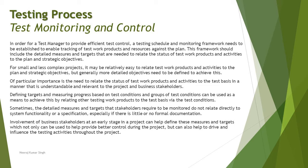Defining targets and measuring progress based on test conditions and groups of test conditions can be used to relate other test work products to the test basis via test conditions. The first thing derived from the test basis is the test condition, and from test conditions you further break them into test cases or test scripts. At any point in time, child work products must be related directly to the test basis. Sometimes the detailed measurements and targets that stakeholders require do not relate directly to system functionality or a specification, especially if there is little or no formal documentation.